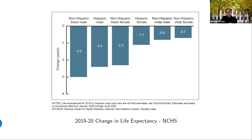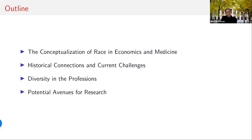How do the disciplines of medicine and economics explain these persistent health gradients, punctuated by periods of convergence and divergence? In this talk, I'll first discuss conceptualizations of race in economics and medicine, primarily focusing on Black versus white differences. Next, we will discuss historical connections to current challenges. Last, I'll talk about diversity in the professions and potential avenues for future research.